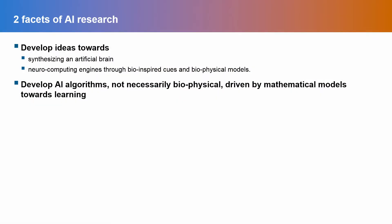The second research area would be neuro computing engines through bio-inspired cues and biophysical models. For example, one might need an artificial retina or an engine which can replace the olfactory system. We cannot just think about a sensory system in itself, but we need to bring in neuro control towards these systems. This is a very interesting confluence of biology, mathematics, physics, computing, and many applied areas.